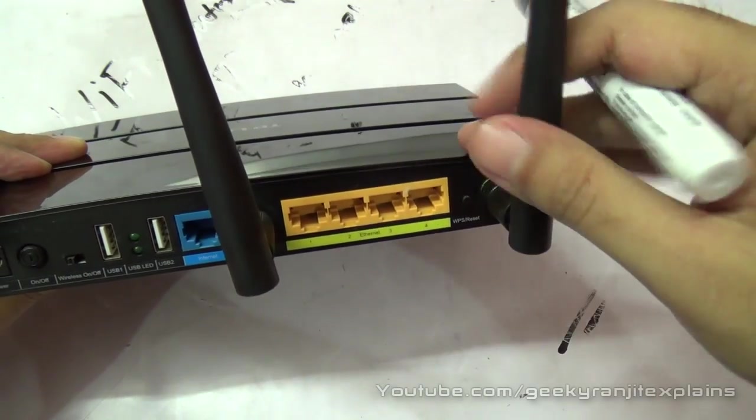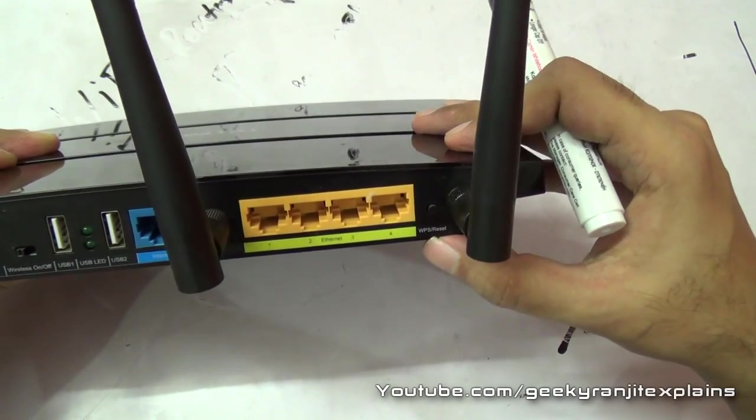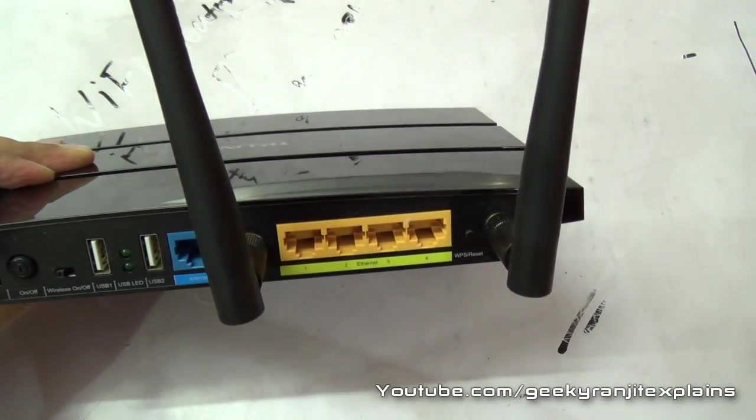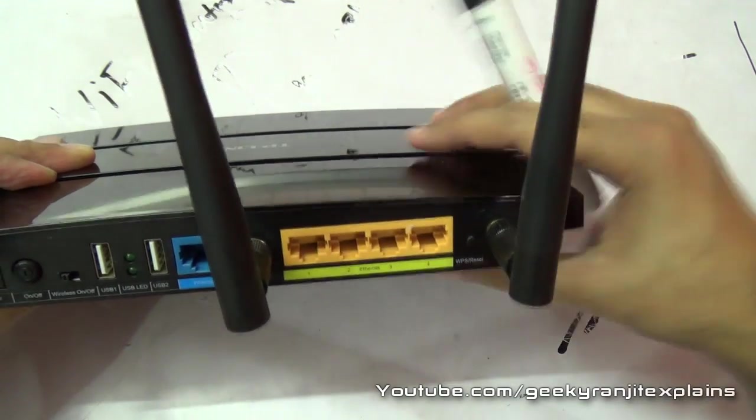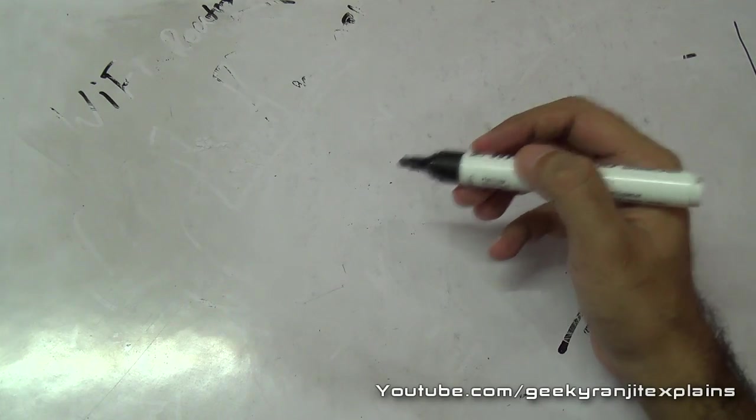Most routers will have at least four Ethernet ports, some have more, and you can connect your computers via this. This has gigabit ports, that's much faster. We also have WPS button on most of the newer routers, so you can just hit this button and hit the WPS button on your device and they will make a secure connection automatically.